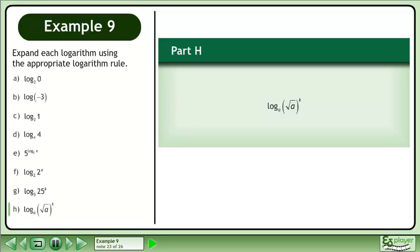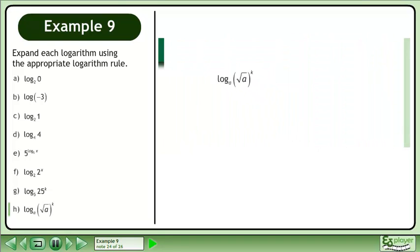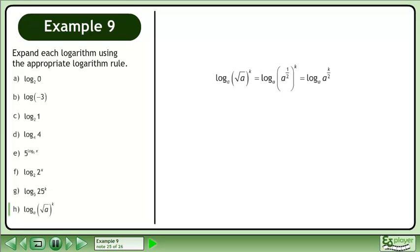In Part H, simplify the base A logarithm of root A to the power of k. Multiply the exponents. Use the rule shown to get the result, k over 2.